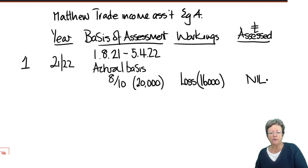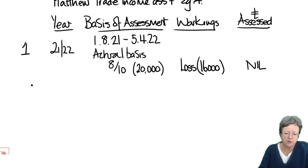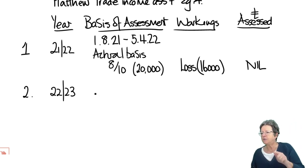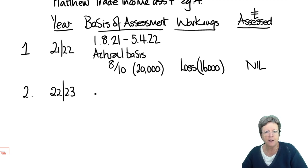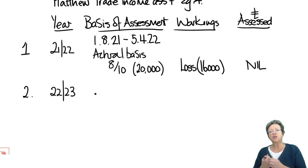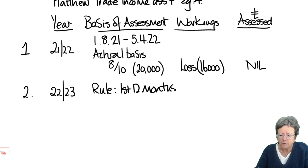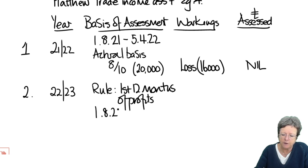So that loss of £16,000 relates to 21-22 and we'll see how we get relief for that later. For Year 2, 22-23: is there a set of accounts that falls in that tax year? Yes, but it's a short set of accounts. So the rule says it must be the first 12 months of profits, from the 1st of August 2021 to the 31st of July 2022.